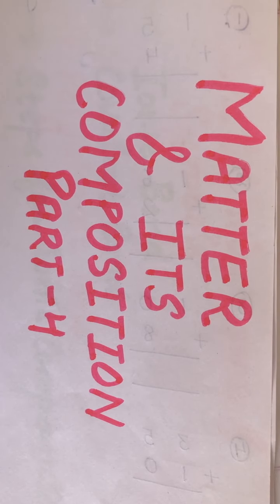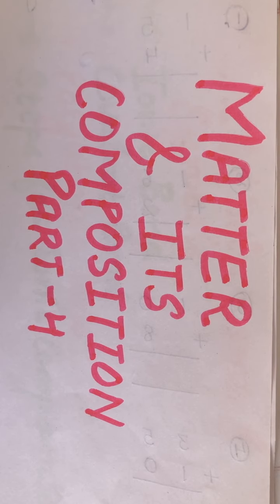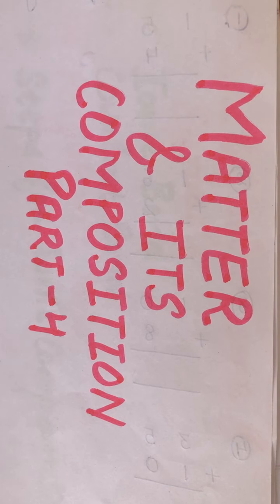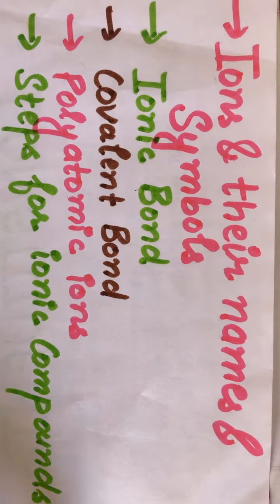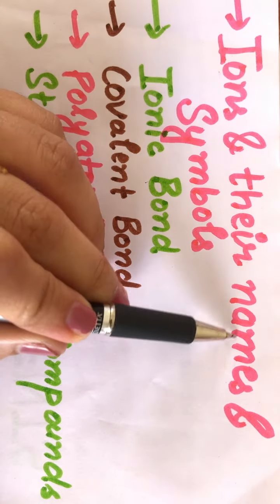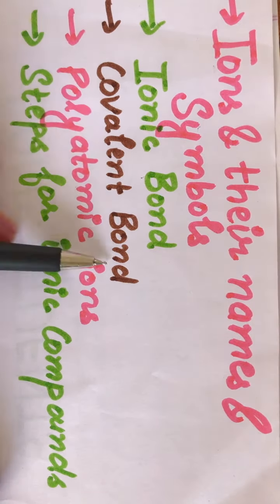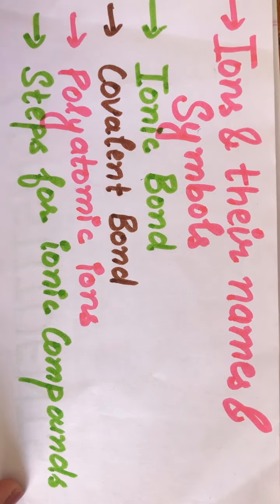Hello everyone, I am Kamal here. I hope you all are fine. Let's start our video. This is our fourth video. Today we will discuss about the chapter further — ions and their names and symbols, then ionic bond, then covalent bond, polyatomic ions, and steps for ionic compounds. So let's start with ions first.